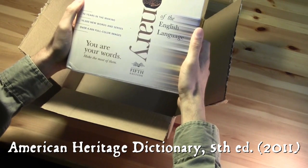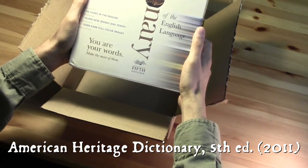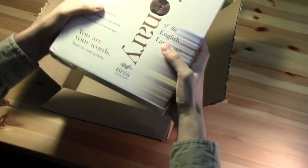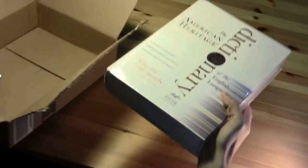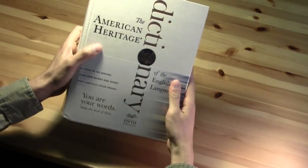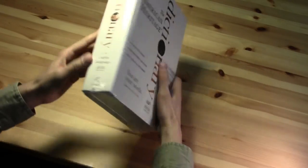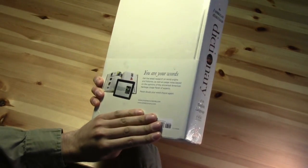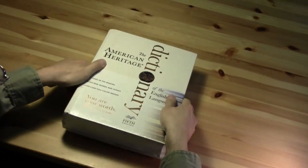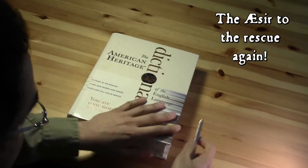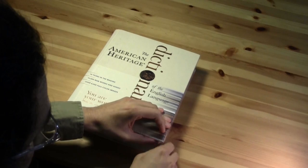There we go. The American Heritage Dictionary, fifth edition. Very heavy. Box out of the way. As you can see, it comes wrapped in plastic with a wrap around here. That's only halfway up the book, the dust jacket. So let's get the plastic off.